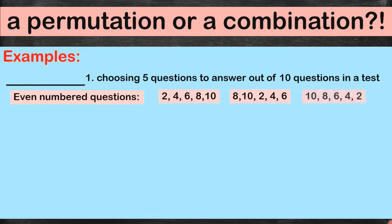It can also be done starting from the end — ten first, then eight, and so on. Now, do these three different orders pertain to the same set of five questions? The answer is yes. The order does not matter. You still answered the same five even-numbered questions. That's why this situation depicts a combination.